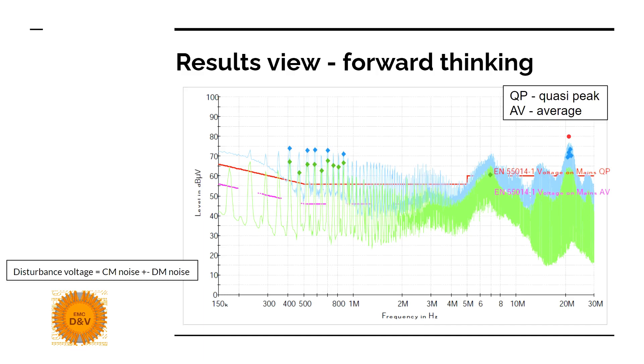This is because the peak detector is much faster than the quasi-peak detector. The important thing is that the DUT disturbance voltage, your noise, consists of common mode noise plus minus differential mode noise.